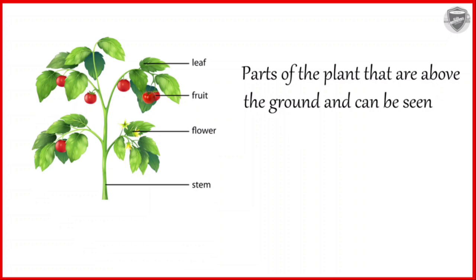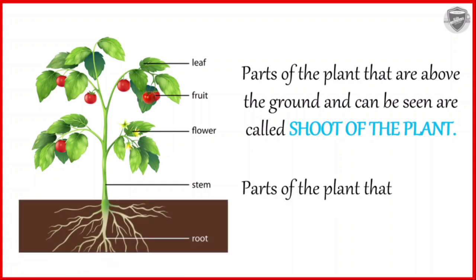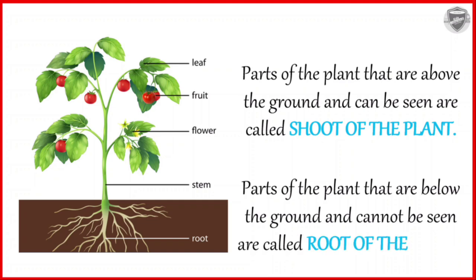Parts of the plant that are above the ground and can be seen are called the shoot of the plant. As you can see in the picture, leaf, fruit, flower and stem all lie above the surface of the ground. Whereas parts of the plant that are below the ground and cannot be seen are called the root of the plant.